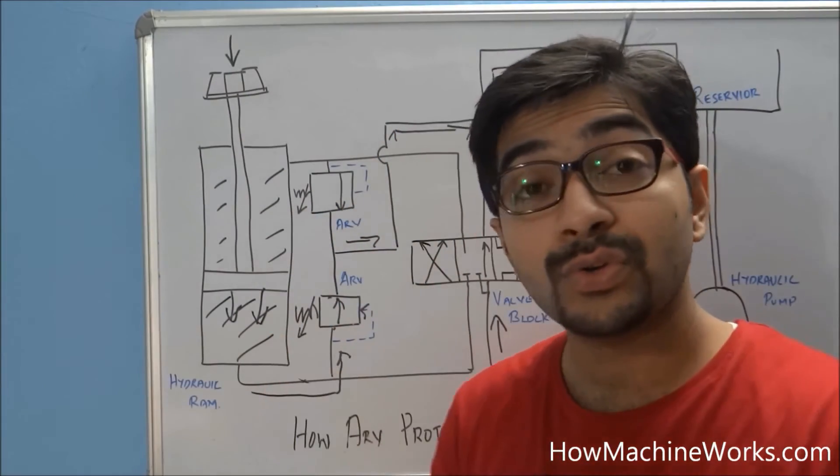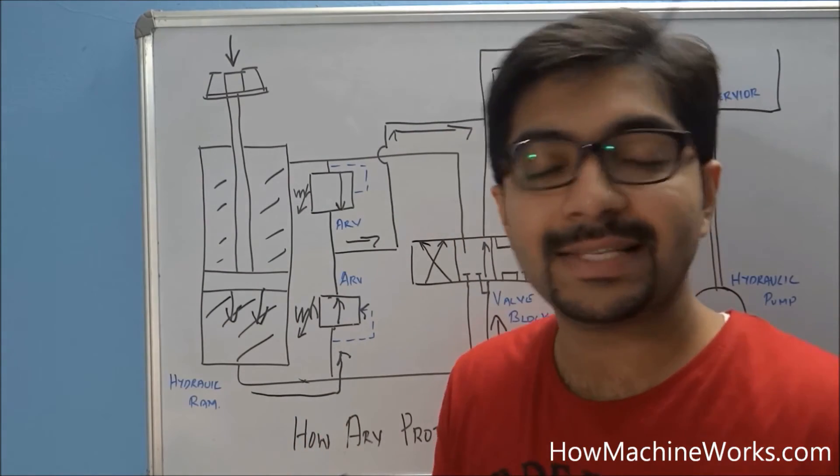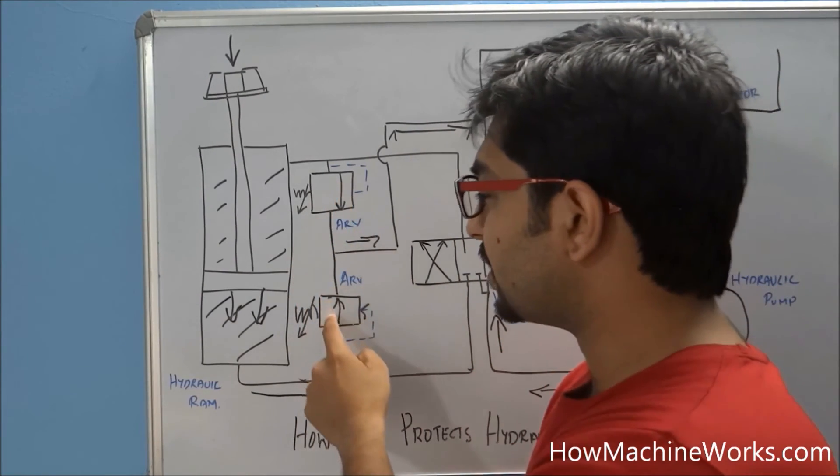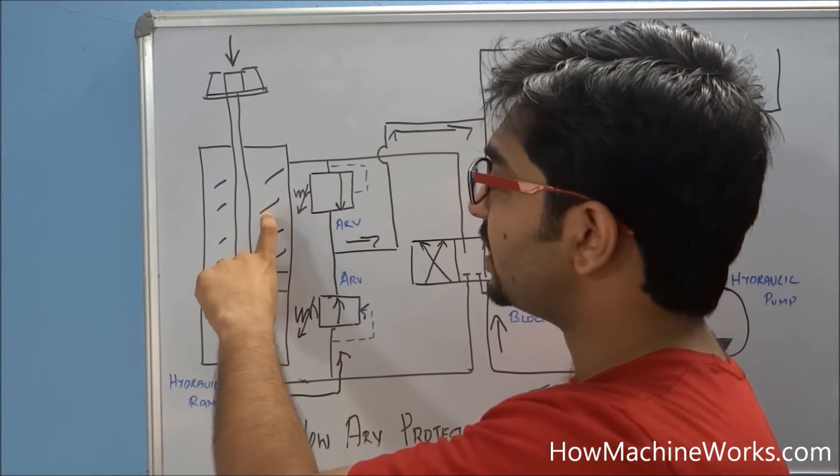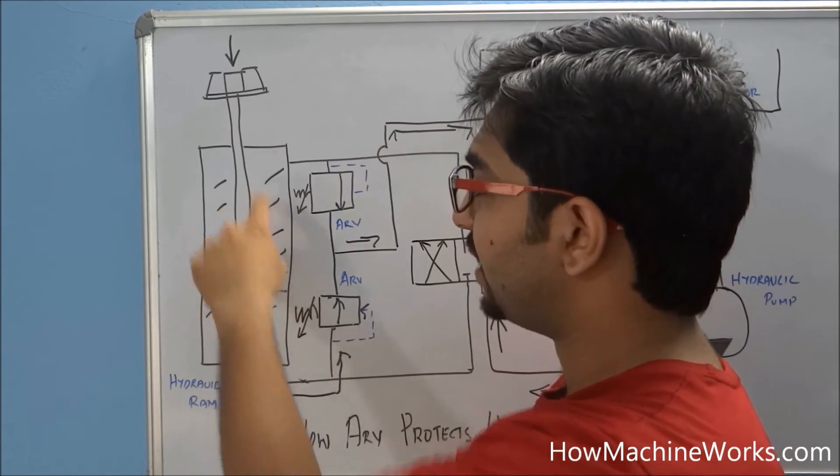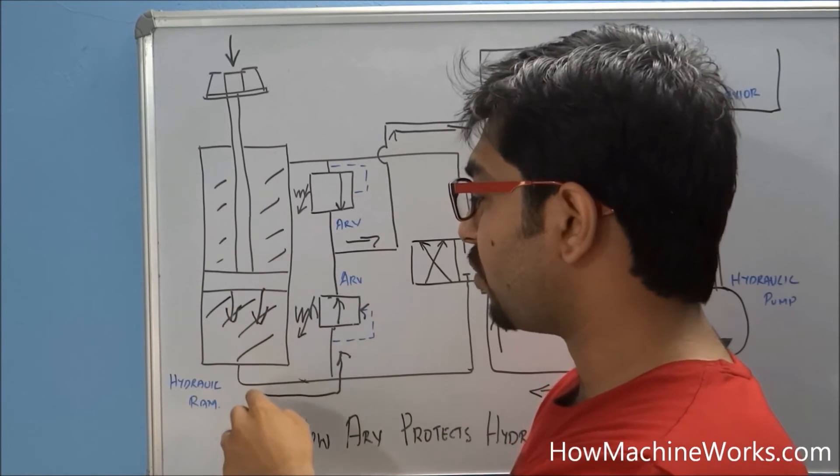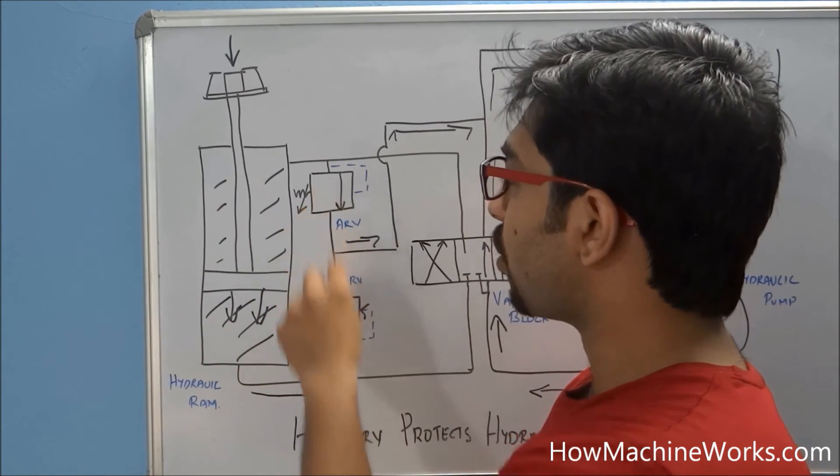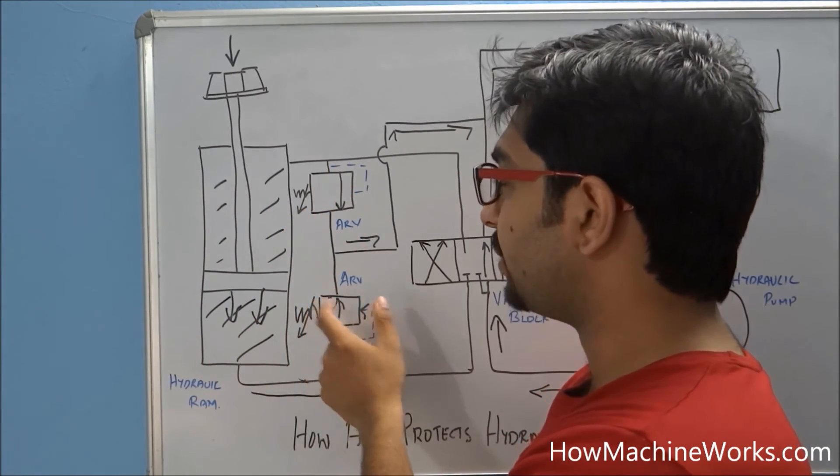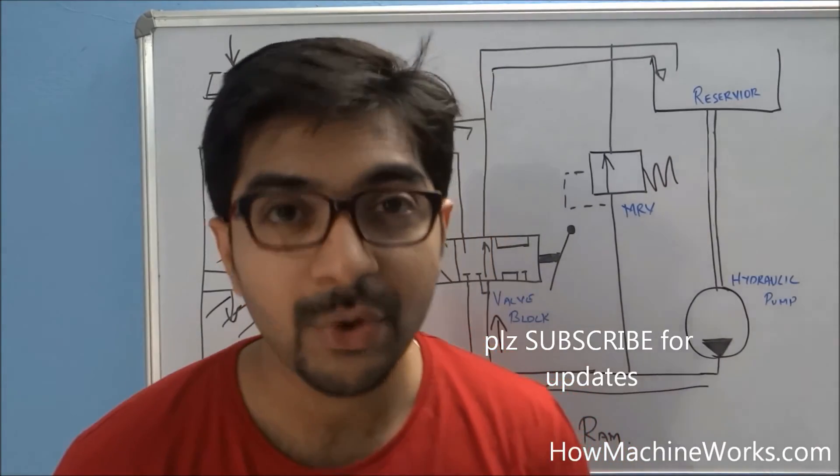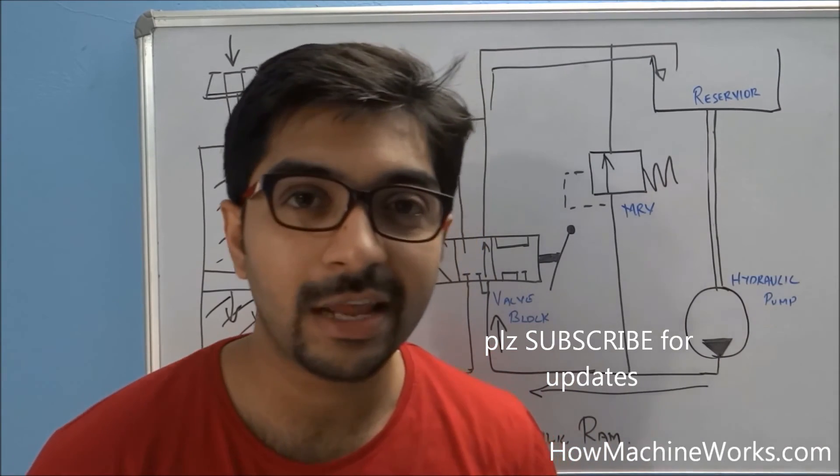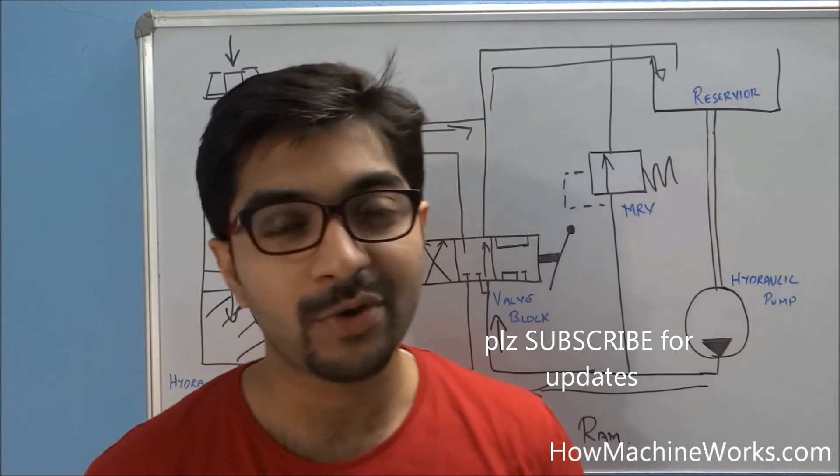To summarize, the function of the auxiliary relief valve is to protect the hydraulic ram by venting out the excess pressure happening in the hydraulic ram. That flow will be redirected to the auxiliary relief valve by opening it up, and escapes towards the return line and reaches the hydraulic tank.